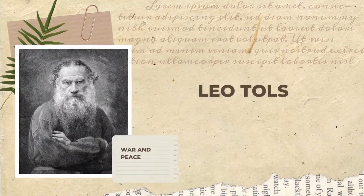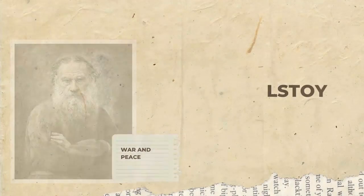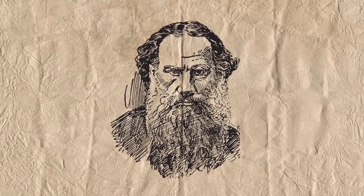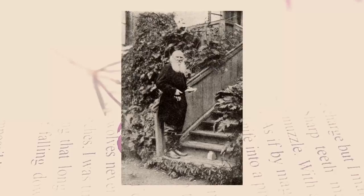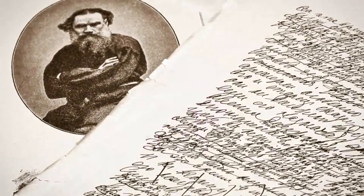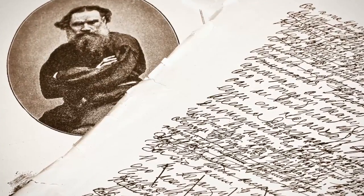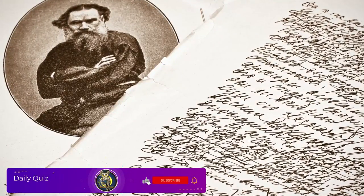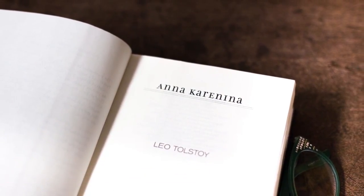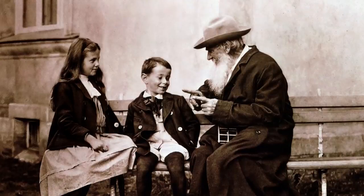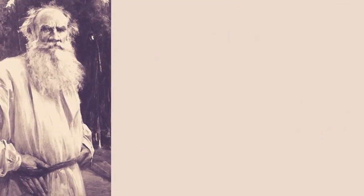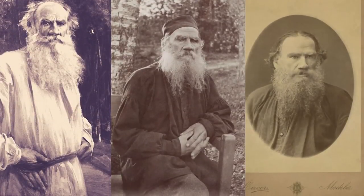The answer is Leo Tolstoy. On September 9, 1828, writer Leo Tolstoy was born at his family's estate Yasnaya Polyana in the Tula province of Russia. He was the youngest of four boys. In the 1860s, Tolstoy wrote his first great novel War and Peace. In 1873, he set to work on the second of his best-known novels, Anna Karenina. He continued to write fiction throughout the 1880s and 1890s; one of his most successful later works was The Death of Ivan Ilyich.